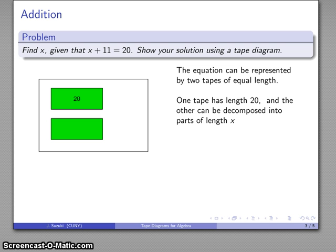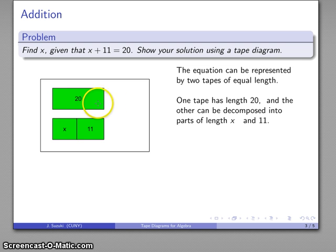And in this particular case, what I seem to be combining is a thing of length x and a thing of length 11. Now, since this x plus 11 has to be the same as 20, that means that this tape here has to be formed by putting together x and 11. So this remainder here has to be my 11. And so there's my tape diagram representation of the equation 20 is equal to x plus 11.